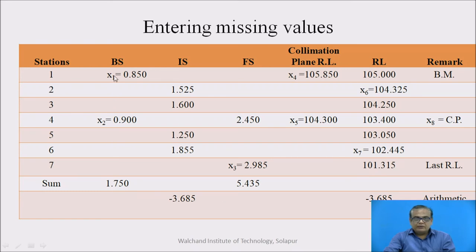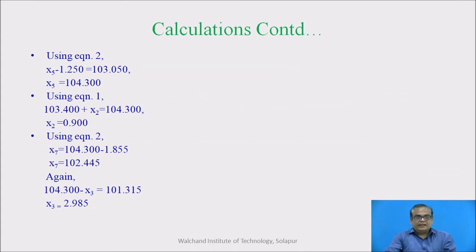Check whether this summation given matches or not. Then foresight reading, its summation is also given. We can check it. And then last RL minus first RL. This particular arithmetic check must get satisfied. Sigma backside minus sigma foresight is equal to last RL minus first RL. So check whether this arithmetic check is obtained or not.